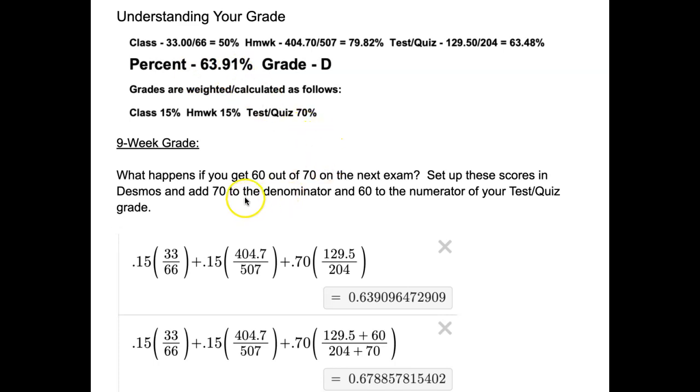And if I want to know what happens if I get 60 out of 70 on the next exam, the way you're going to calculate that is to add 70 points, 70 more points in the test quiz scores, and then what you get correct, you're going to put in the numerator 60. And that's going to increase your grade to 67.89%.